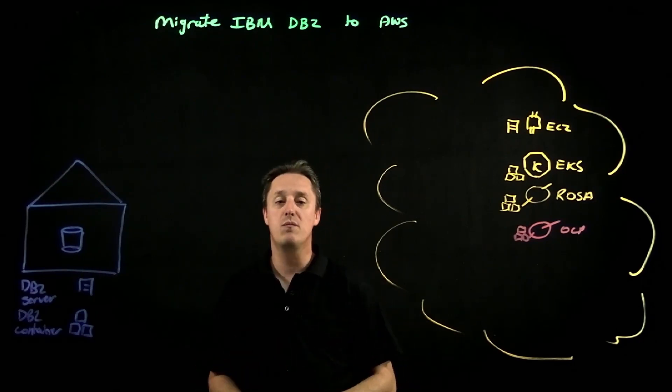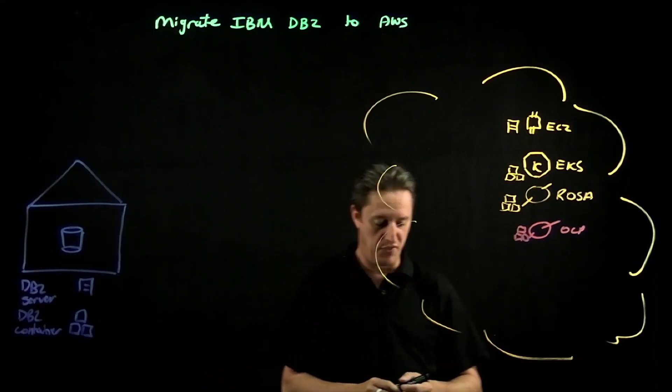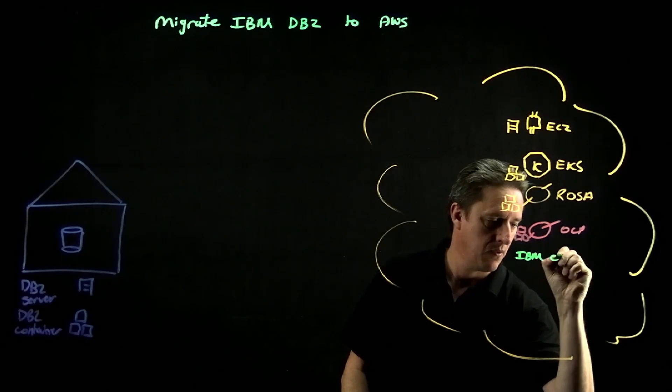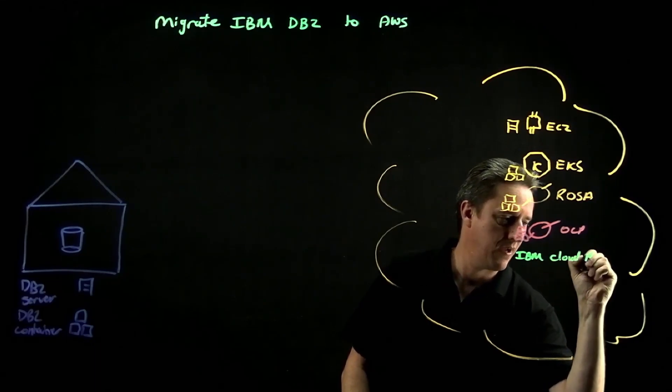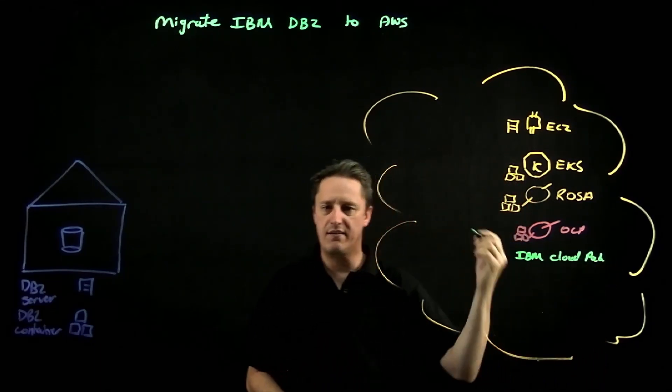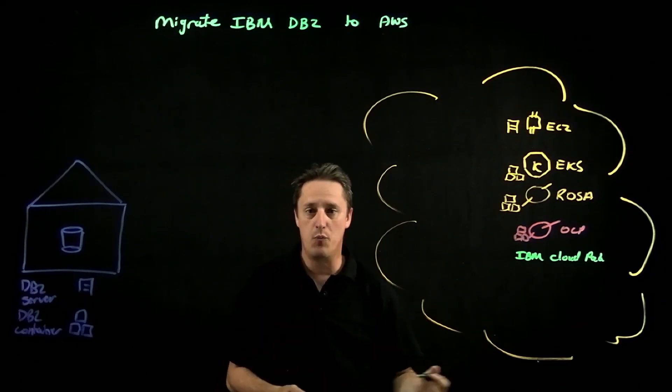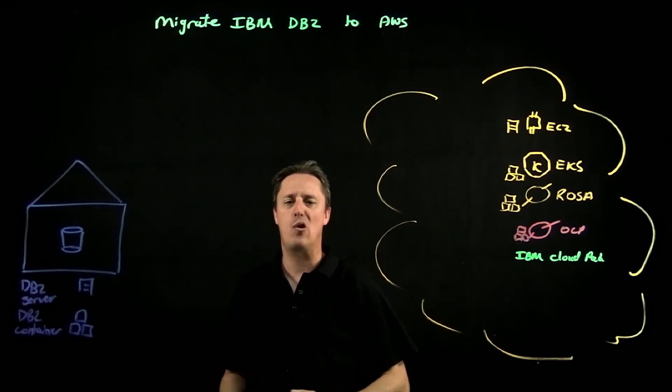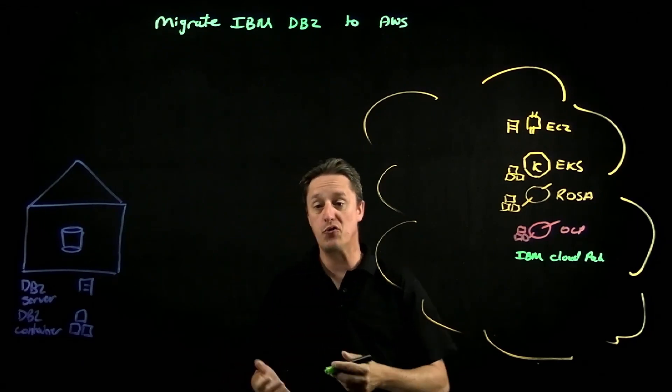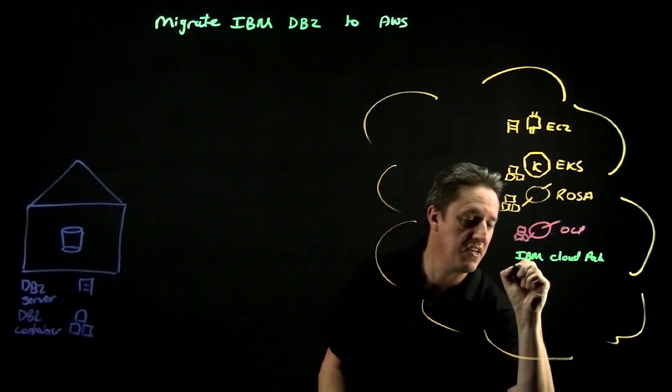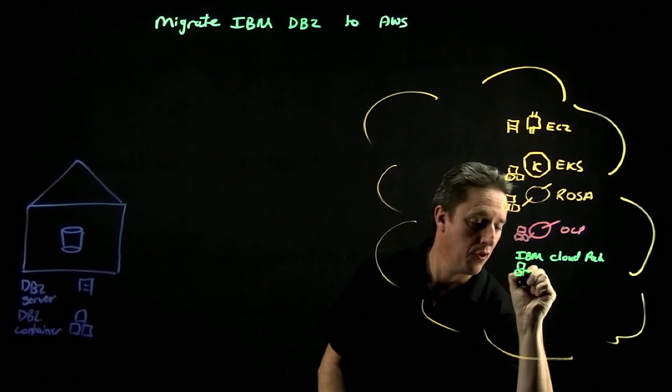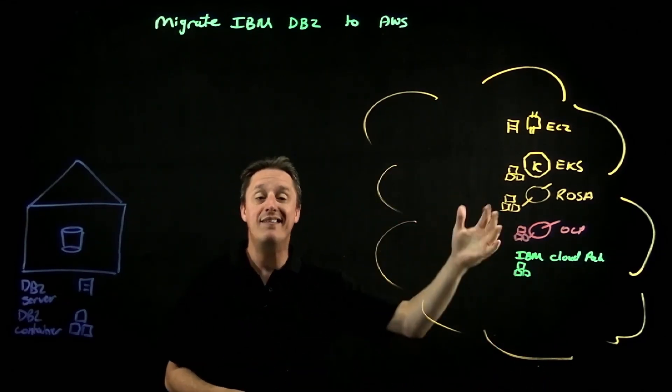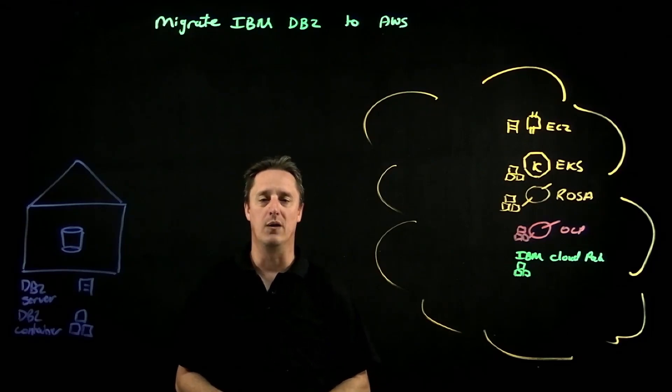We could also have customers who are working with something like an IBM cloud pack, cloud pack for data, cloud pack for automation. Various cloud packs do have a database component and that database component could be DB2 under the hood. And then of course, in the future, we may see other options manifesting here as well.